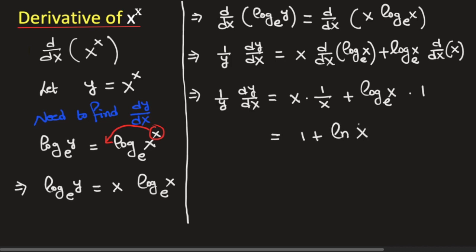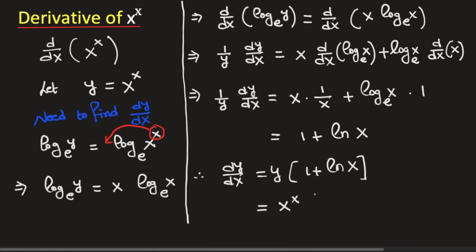Natural logarithm is the logarithm with base e. So we obtain that dy/dx is equal to y times (1 plus ln(x)). Now we will put the value of y which is x to the power x. So dy/dx is equal to x to the power x times (1 plus ln(x)). And this is the derivative of x to the power x — our final answer.